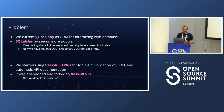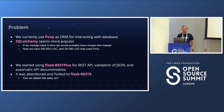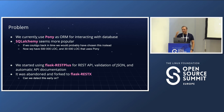Another problem we ran into is that we started using Flask REST Plus for building a REST API — we used it for validating JSON objects and creating automatic API documentation. The problem is that Flask REST Plus was at one point completely abandoned. We tried to contribute but got no response from the maintainer, who had just abandoned the project. There was a fork called Flask REST X that we were lucky to switch to instead.